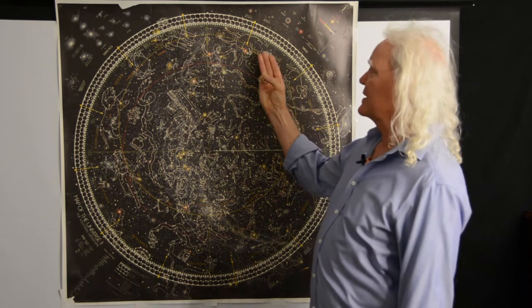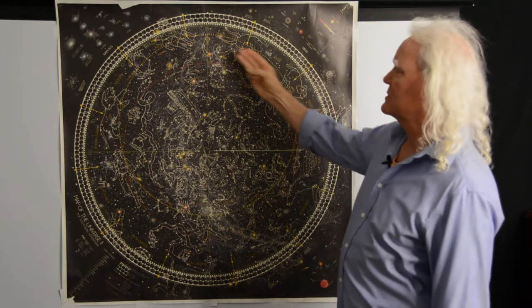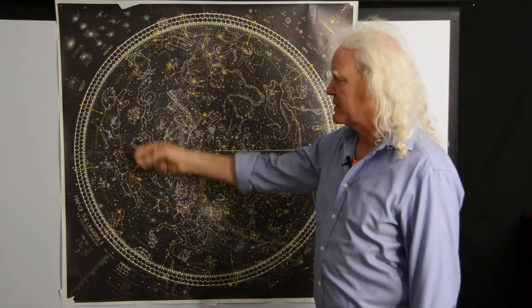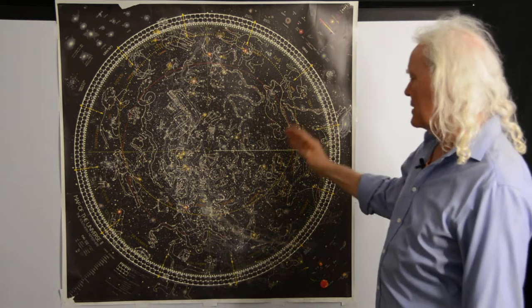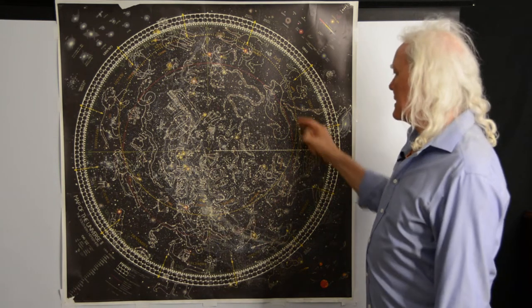So here once again is the zodiac as you can see: Aries, Taurus, Gemini, Cancer, Leo, Virgo, Libra, Scorpio, Sagittarius, Capricorn, Aquarius, and Pisces.